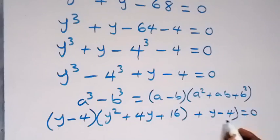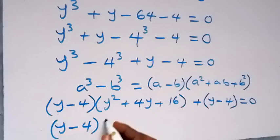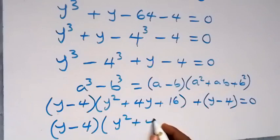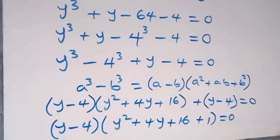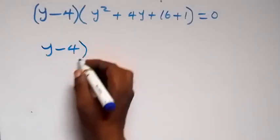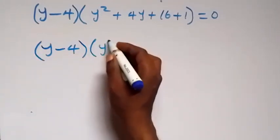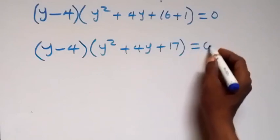Equals 0. Now from here we can put y minus 4 in brackets and factor that out — y minus 4 into bracket. What is left here is y squared plus 4y plus 16, then plus 1, equals 0. This becomes y minus 4 multiplied by y squared plus 4y plus 17, equals 0.